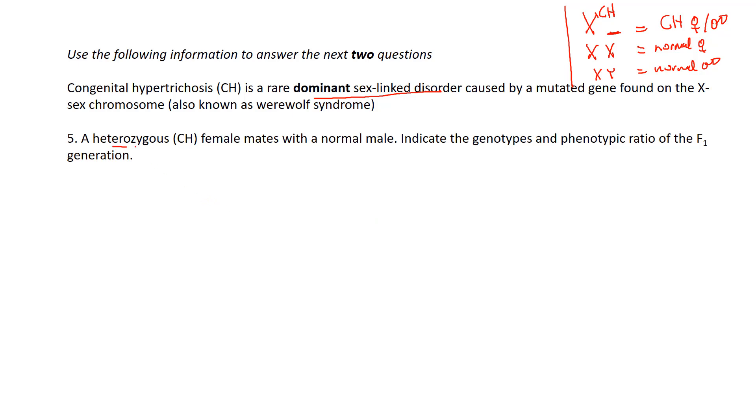So the second part is a heterozygous CH female mates with a normal male. Indicate the genotype and phenotype of the F1 generation. So we underline the parents. If she is a CH, she must have an X with a CH. And because she is heterozygous, hetero meaning different, her other sex chromosome is just a regular normal X, which is recessive though.